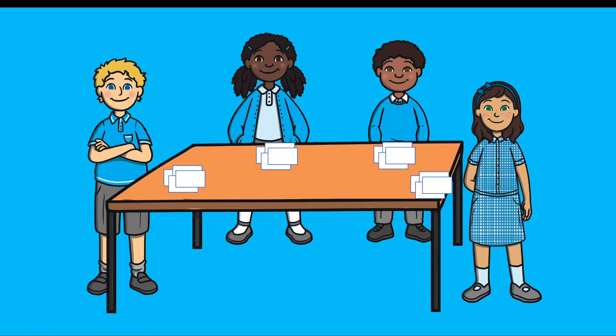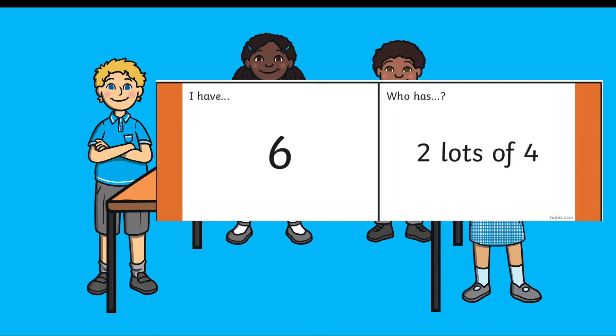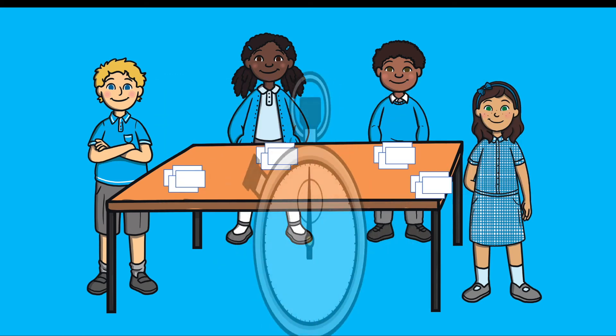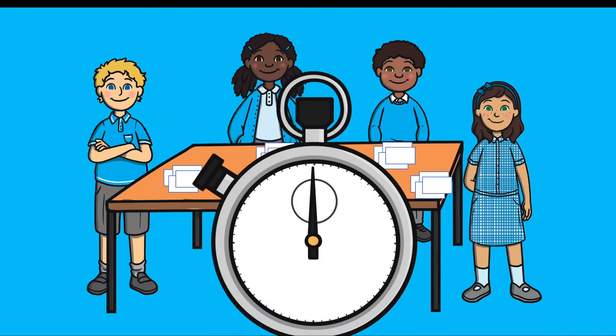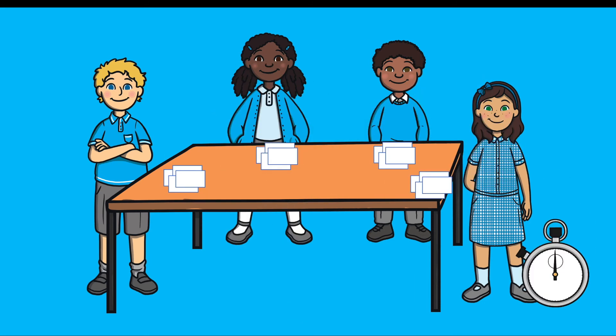For example, a group of children who have learnt or are still learning their three, four and eight times tables could play together. Alternatively, it could be a timed activity and groups raced against other groups to finish the loop first.